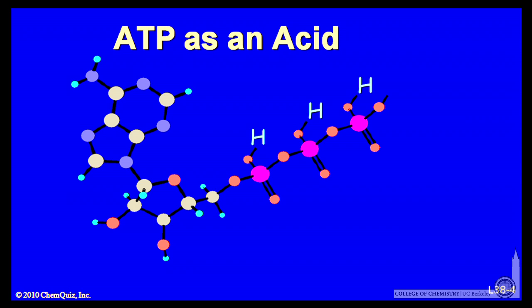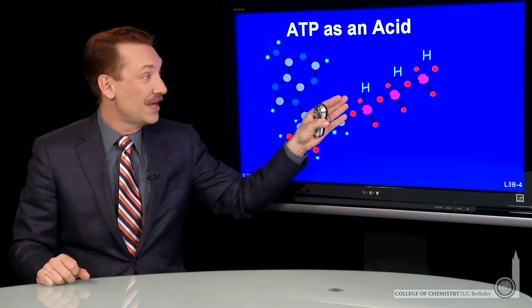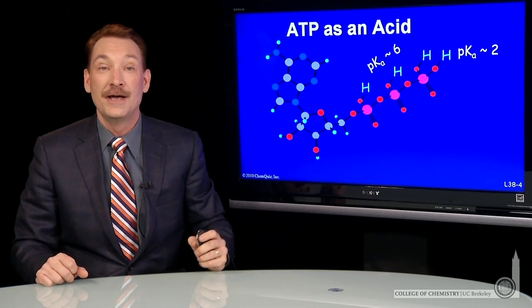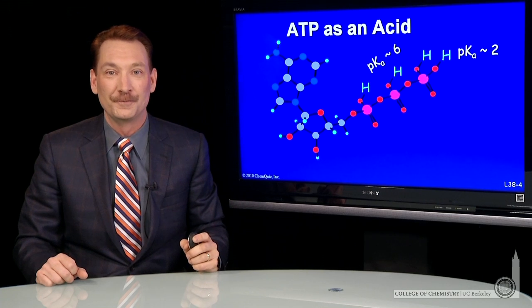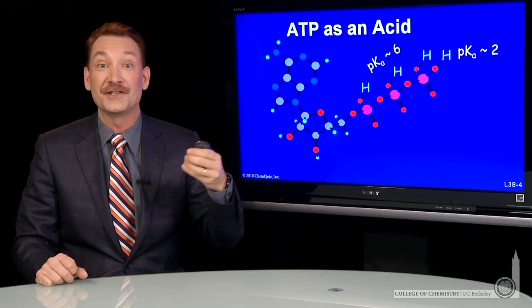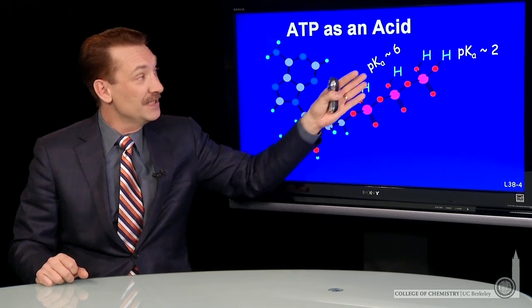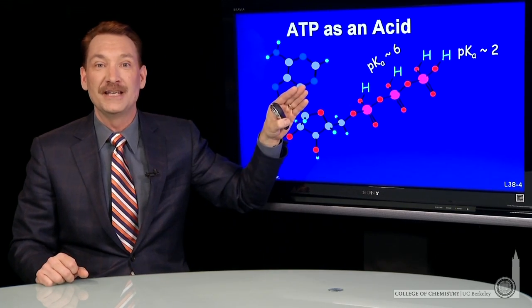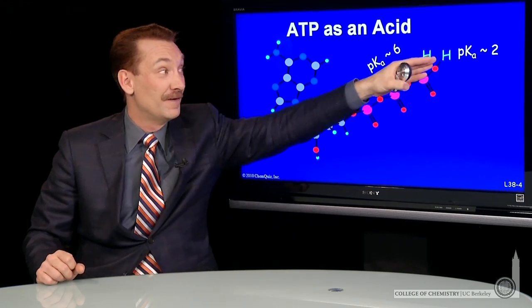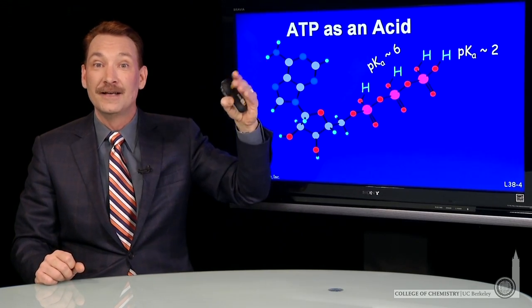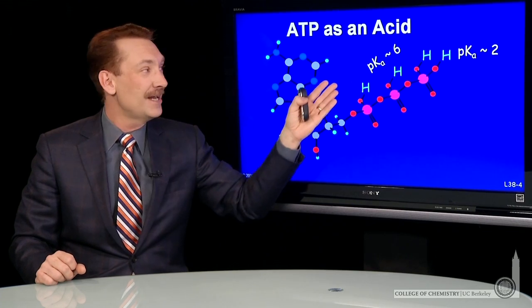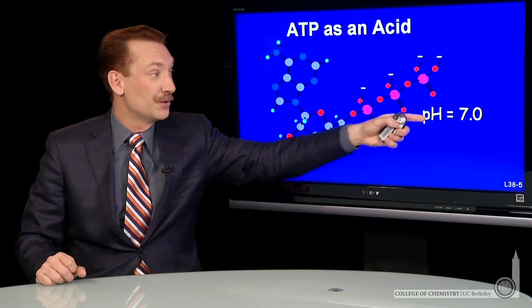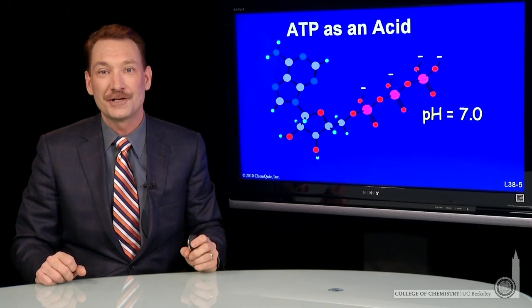Now, ATP is an acidic molecule. It has three acidic protons here, pKa's around six, and an acidic proton terminally here, a pKa of around two. Now, in biological solution, where you're around pH 7, these protons will be removed. pH 7 is one pH unit above this pKa, and it's five pH units above this pKa on the basic side. So when you're on the basic side of the pKa, above the pKa in pH, the basic form predominates. So at pH 7, ATP is a highly charged molecule.